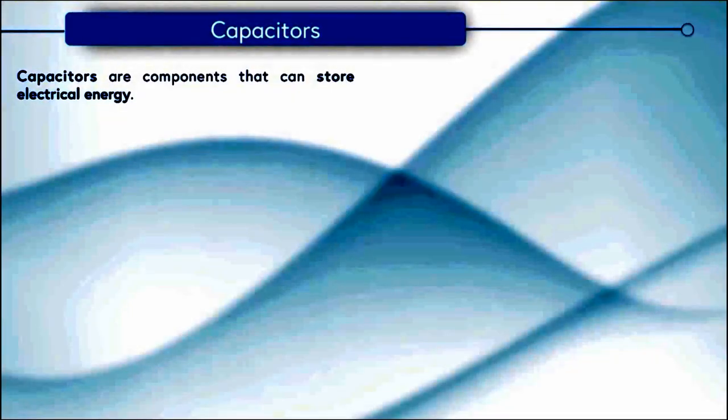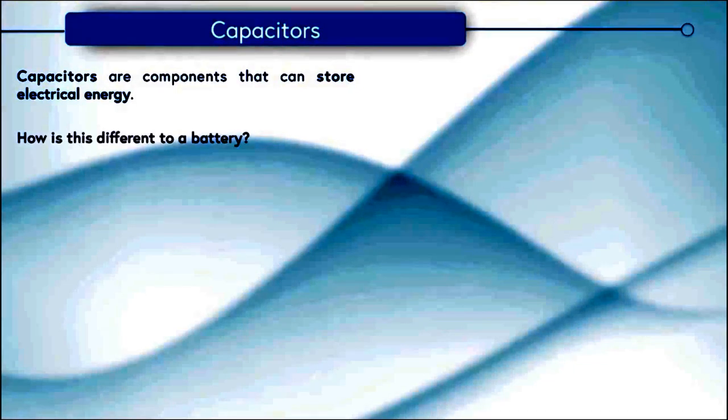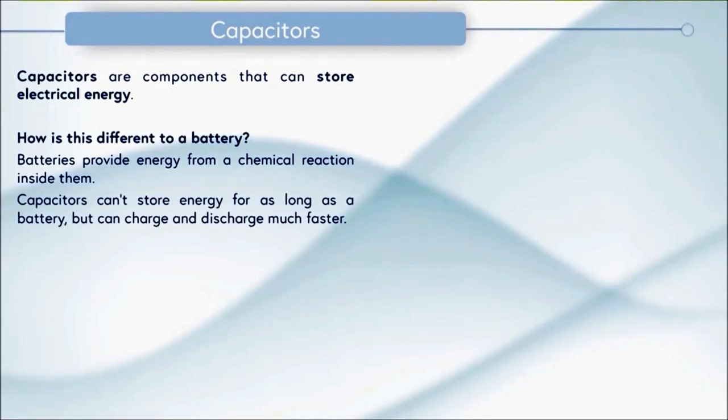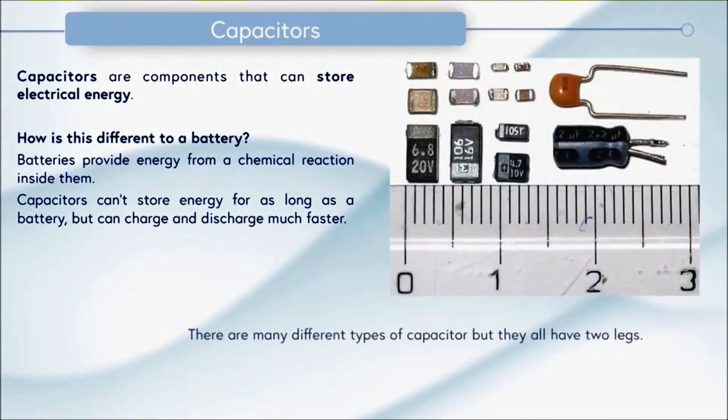Capacitors are components that can store electrical energy. How is this different to a battery? Well batteries provide energy from a chemical reaction inside them whereas capacitors are purely concerned with electrical energy. Capacitors can't store energy for as long as a battery but they can charge and discharge much faster which has many applications in circuits. Here's some pictures of capacitors. You can see there are many different types but they all have two legs.